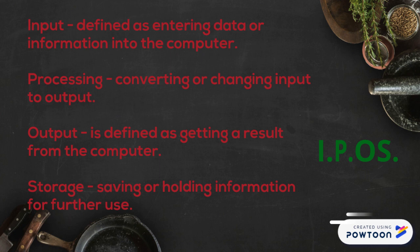Then we have processing. Processing can be thought of as changing, converting, or translating input into output. For example, when you're using a keyboard to type something on your computer system, when you press that key on the keyboard, that will be considered input. Then something happens inside the computer system.